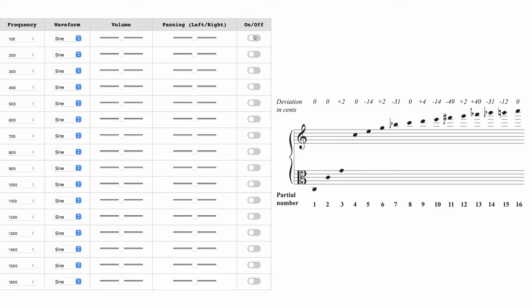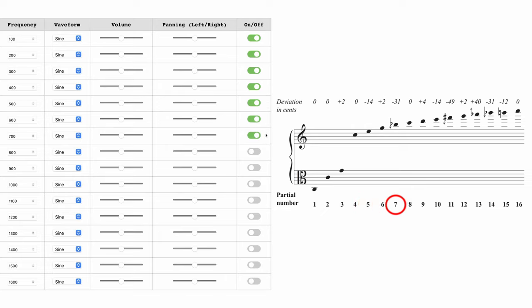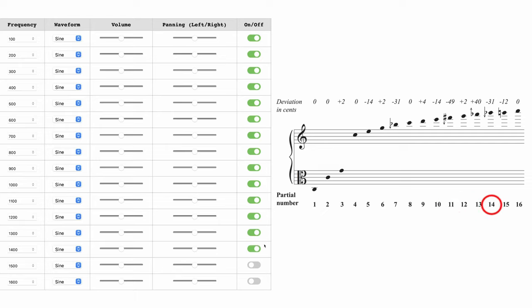Let's use a tone generator to replicate the first 16 harmonics, or overtones, using a 100 Hz sine wave as our vantage point. For each overtone, we add 100 Hz to the equation. As we add the different overtones, it kind of sounds like we're building a chord. However, when we have all 16 harmonics or overtones playing at the same time, it still sounds like one note.